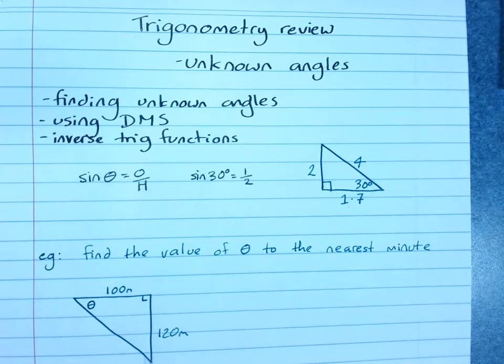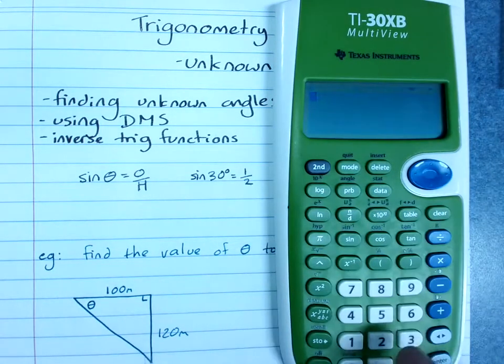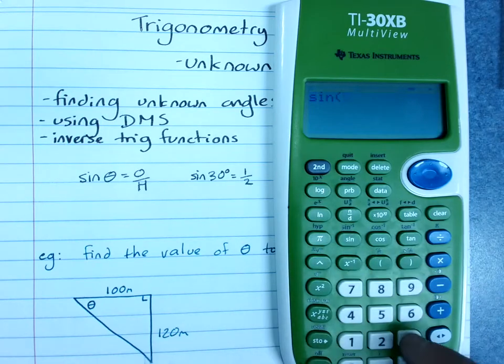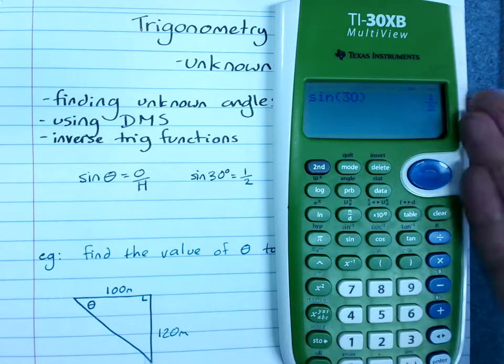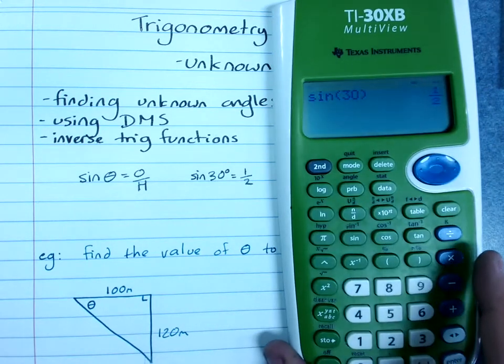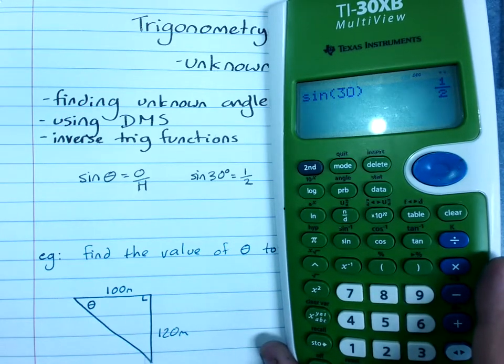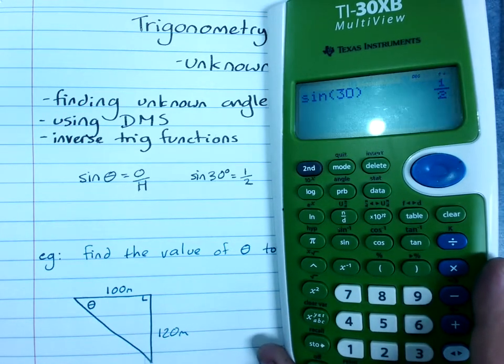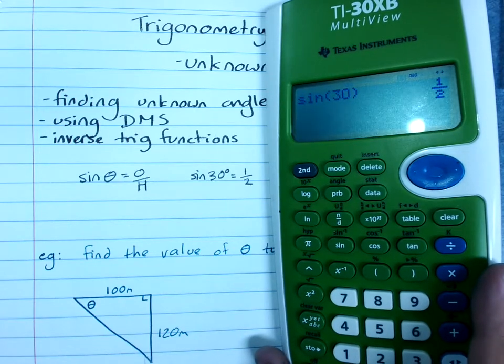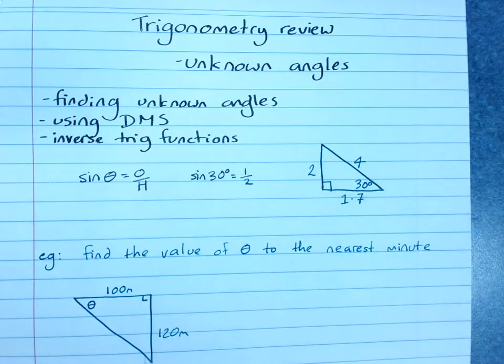If I use my calculator and type in sine 30, it tells me it's a half. So that's saying if you've got a right angle triangle and you take the opposite over the hypotenuse of 30 degrees, you'll get a half.